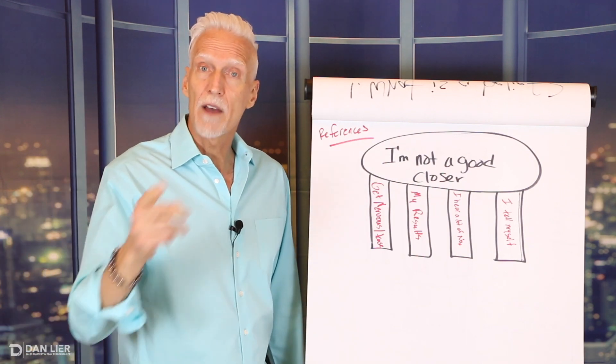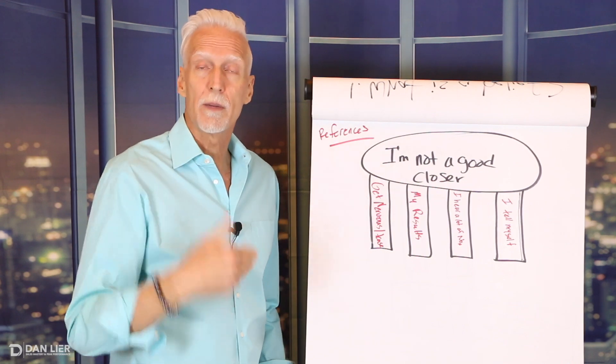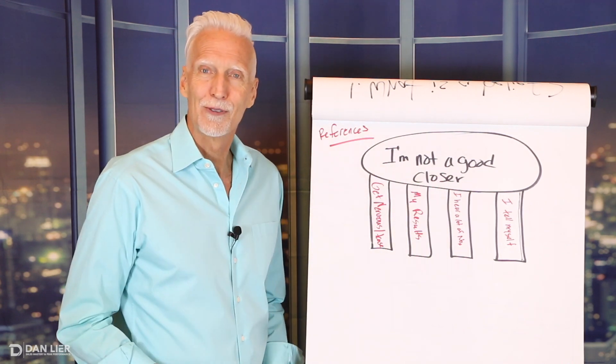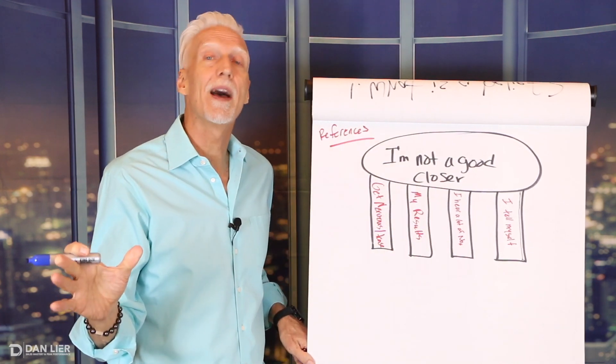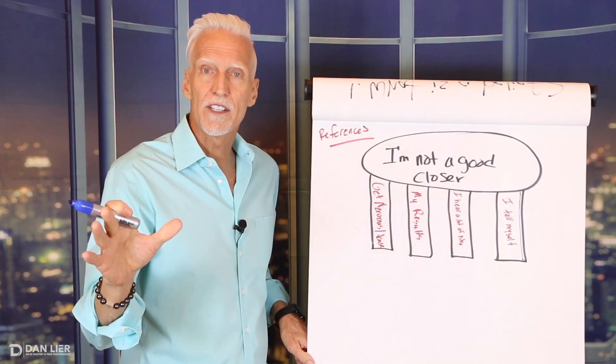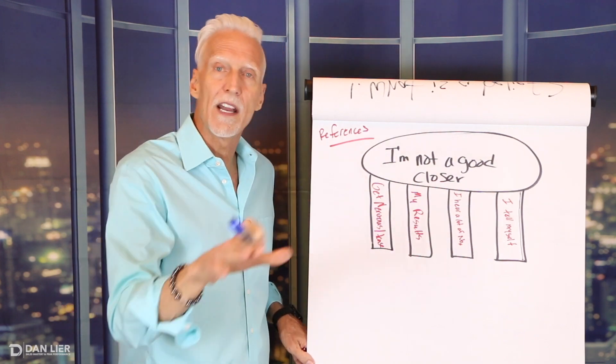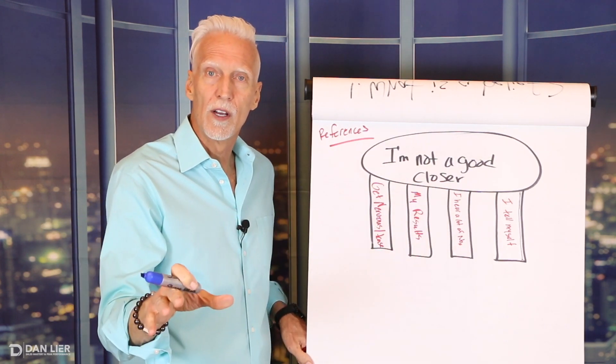Have you ever gotten nervous and tense about something in the past, and then you got good at it, and now you're not nervous and tense about that thing in the past that you used to be tense or nervous about? Yes or no? Yes. Okay. So you get nervous and tense, but you've had something in the past that you've been nervous and tense about that you've overcome that, and you've not been nervous and tense before. True? Yeah. Okay. Great.